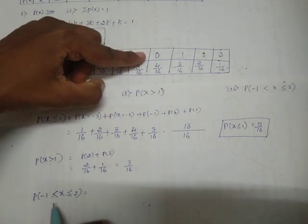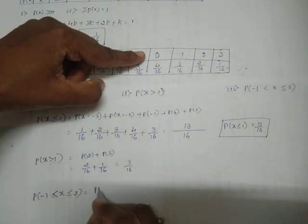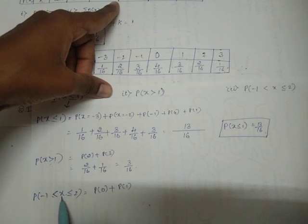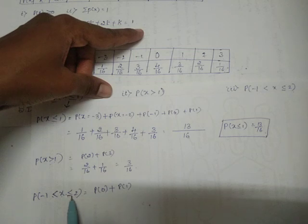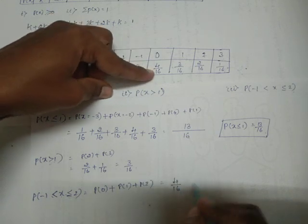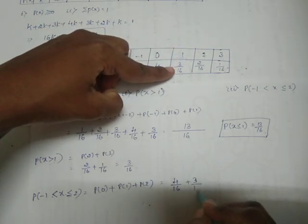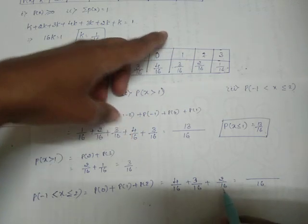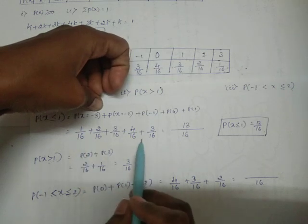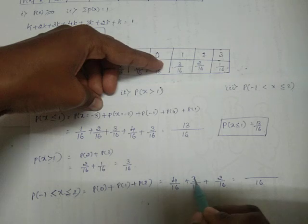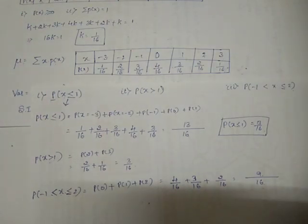Since −1 is excluded, we consider x values starting from 0 up to and including 2. So P(−1 < X ≤ 2) = P(X = 0) + P(X = 1) + P(X = 2) = 4/16 + 3/16 + 2/16. Do not simplify 2/16 to 1/8, so the denominator stays 16. Adding the numerators: 4 + 3 = 7, 7 + 2 = 9. Therefore the answer is 9/16.